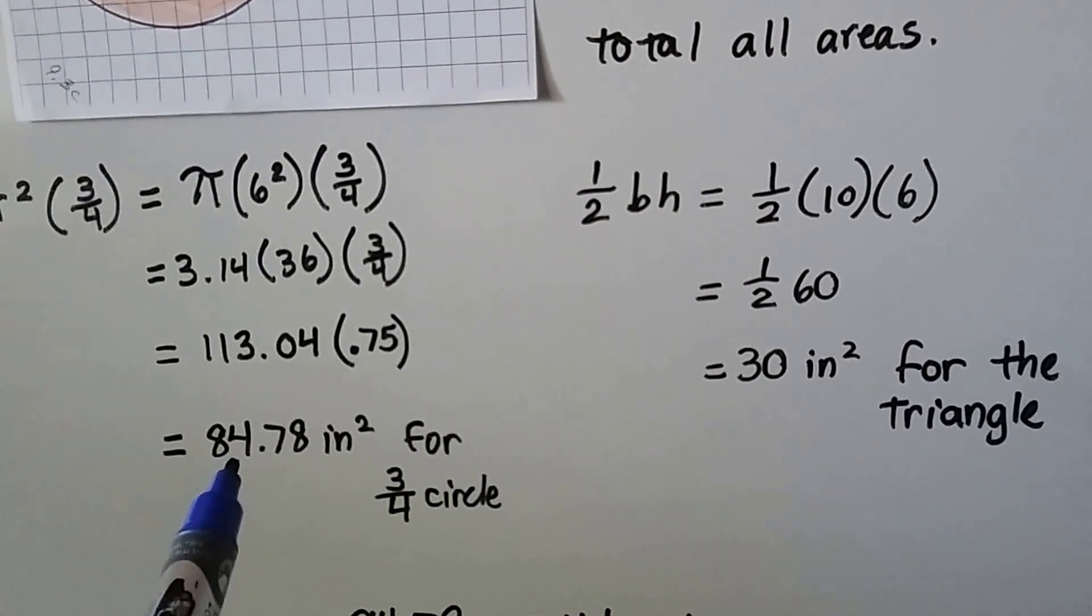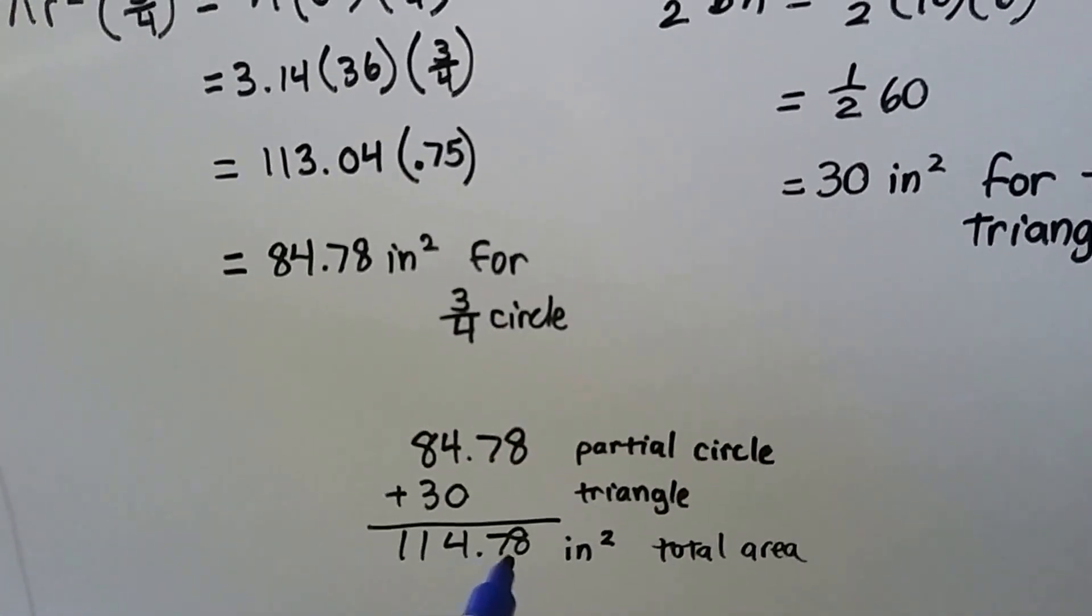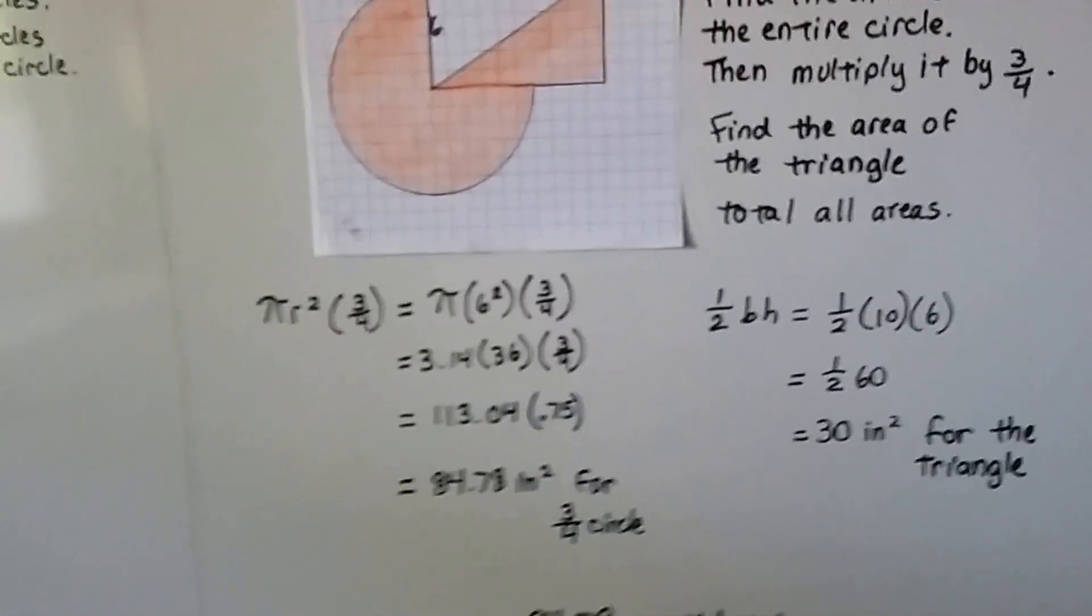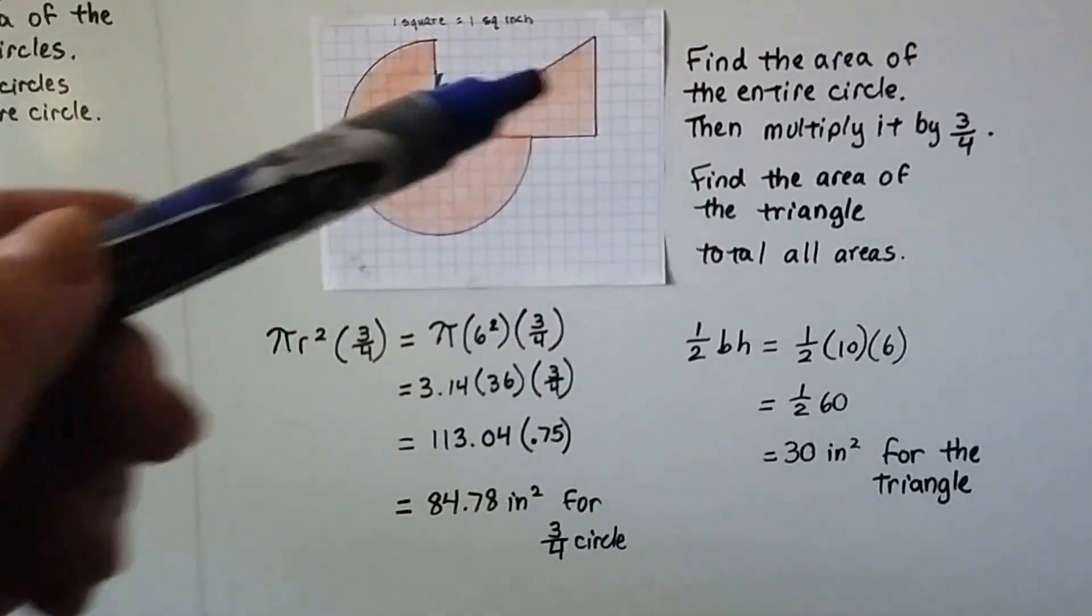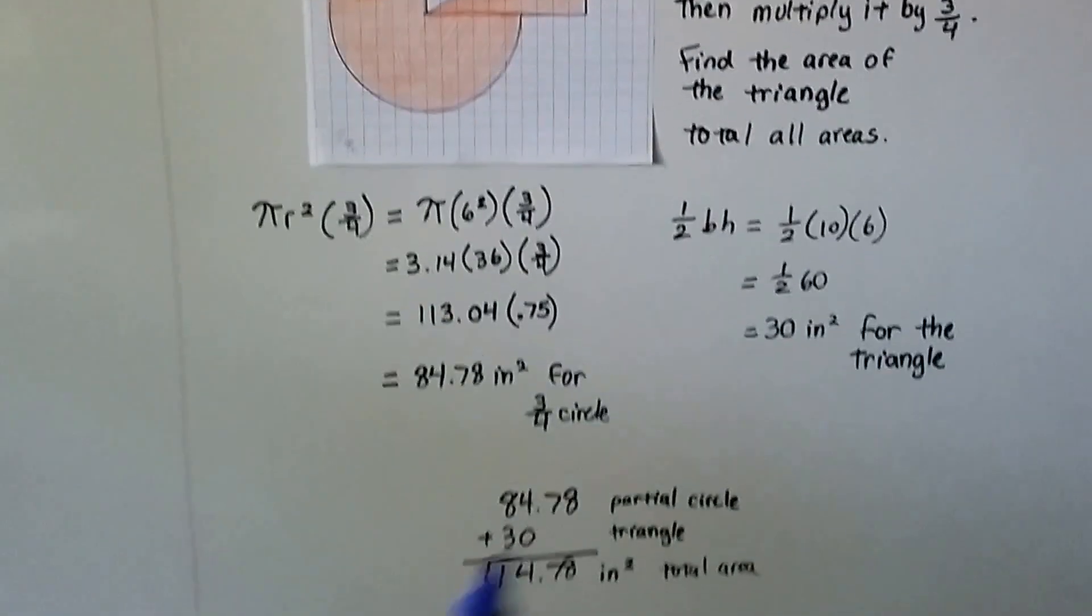We add that to the 3/4 circle, we get 114.78 inches squared for the whole area. So by breaking it apart into two separate areas, we can figure them out separately and then just add them together.